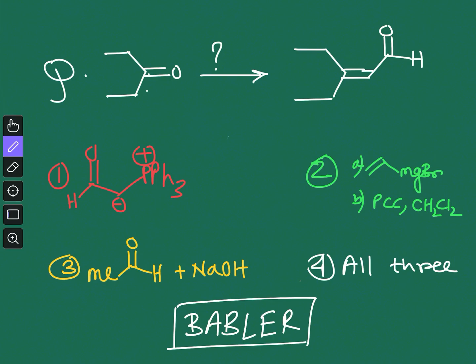I will discuss this reaction in the form of an MCQ question, and after discussing this question I will also present two important examples of the same reaction. In the question, you have to convert this carbonyl compound to this alpha-beta unsaturated aldehyde, and you are given four options to choose from.